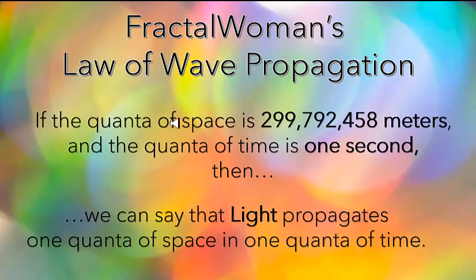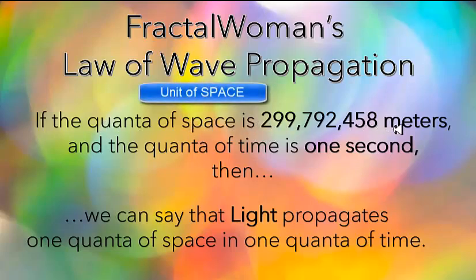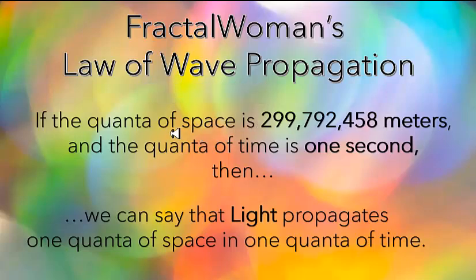If we let the quanta of space be 299,792,458 meters, or approximately 300 million meters, and we let the quanta of time be one second, then we can say that light propagates one quanta of space in one quanta of time. Although this is a natural unit system, it would not be practical to have a unit of space equal to 300 million meters. There's no way we could make a measuring stick that long, so this measuring system is not chosen for our unit system.